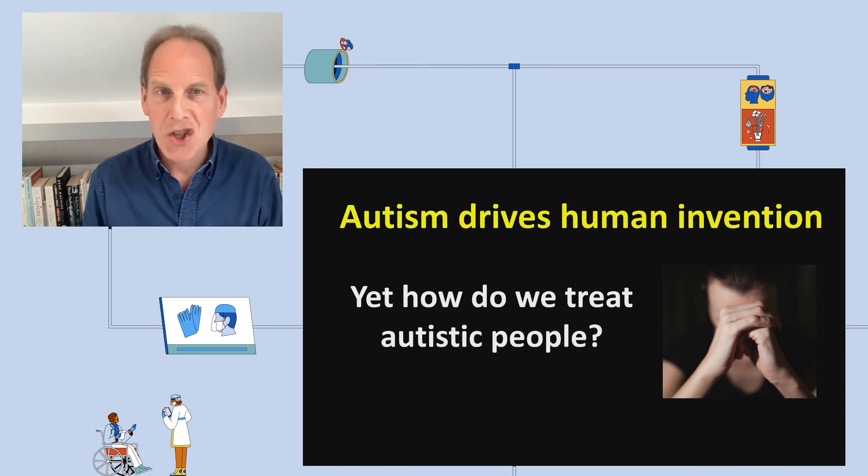So we've got evidence that the genes for autism have driven human invention. But how are we as a society treating autistic people? The majority of autistic people are unemployed and they have high levels of poor mental health, likely the result of lack of support and being excluded from the worlds of education and work. We owe autistic people a huge debt of gratitude for the role that their genes have played in human progress, and we have a moral responsibility to ensure that no group of individuals are deprived of their human rights to education, employment, and participation in society.